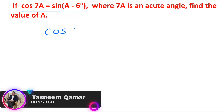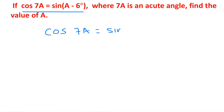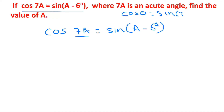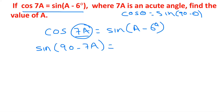So cos 7a equals sin(a - 6°). We can write cos θ as sin(90° - θ). Assuming θ = 7a, we can write cos 7a as sin(90° - 7a). Since both sides now have sin, we can proceed.